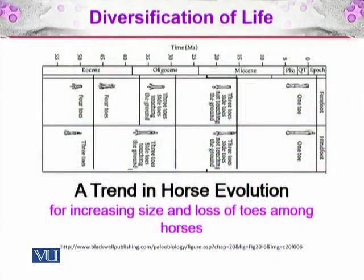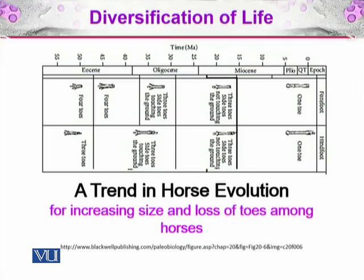What about trend in horse evolution? This trend is for increasing size and loss of toes among horses. Over the last 60 million years — through the Eocene, Oligocene, Miocene, Pliocene, Quaternary, and recent Epoch — the forefoot and hind foot of the horse family (Equidae) show decreasing number of toes and increasing size. Coming towards the present, there is one toe compared to four toes in the forefoot, and one toe compared to three toes in the hind foot. This is a trend.